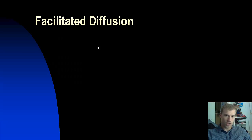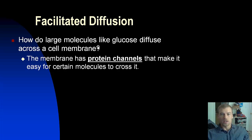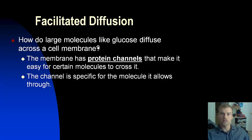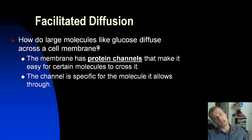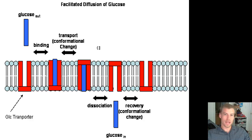Another type of passive transport is facilitated diffusion. This helps larger particles like glucose and other solutes be able to diffuse. The membrane has proteins — specifically called protein channels — that make it easy for certain molecules to cross. The channel is specific for the molecules it allows through, similar to how enzymes are specific to certain substrates. Facilitated diffusion does not require the use of the cell's energy.